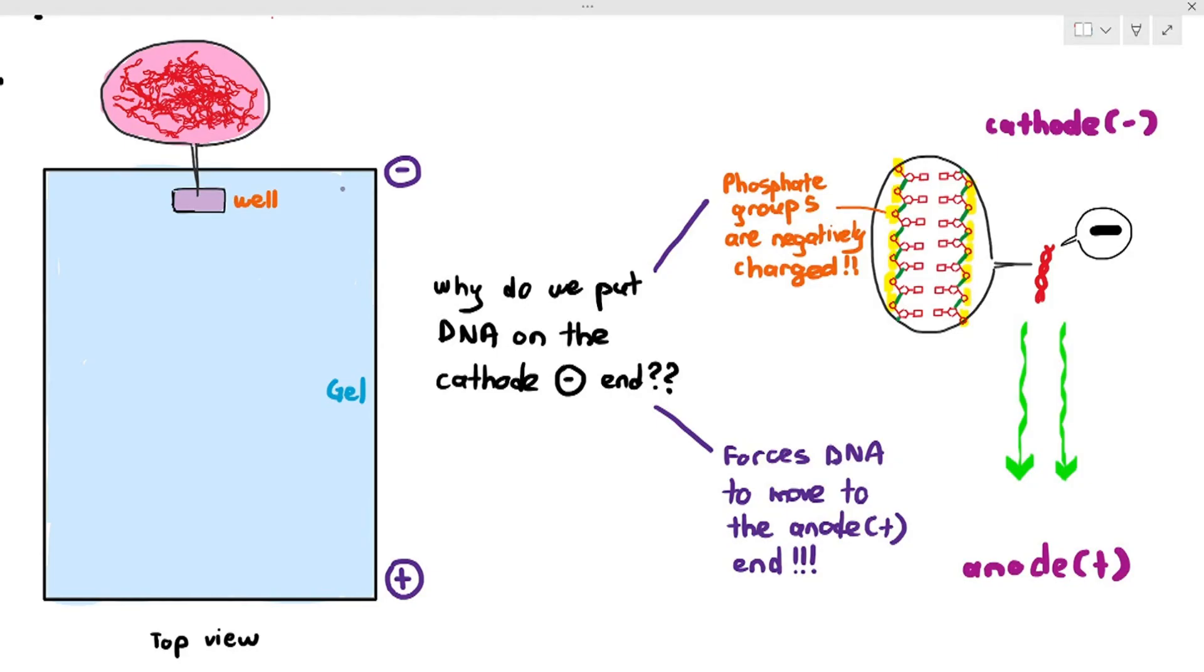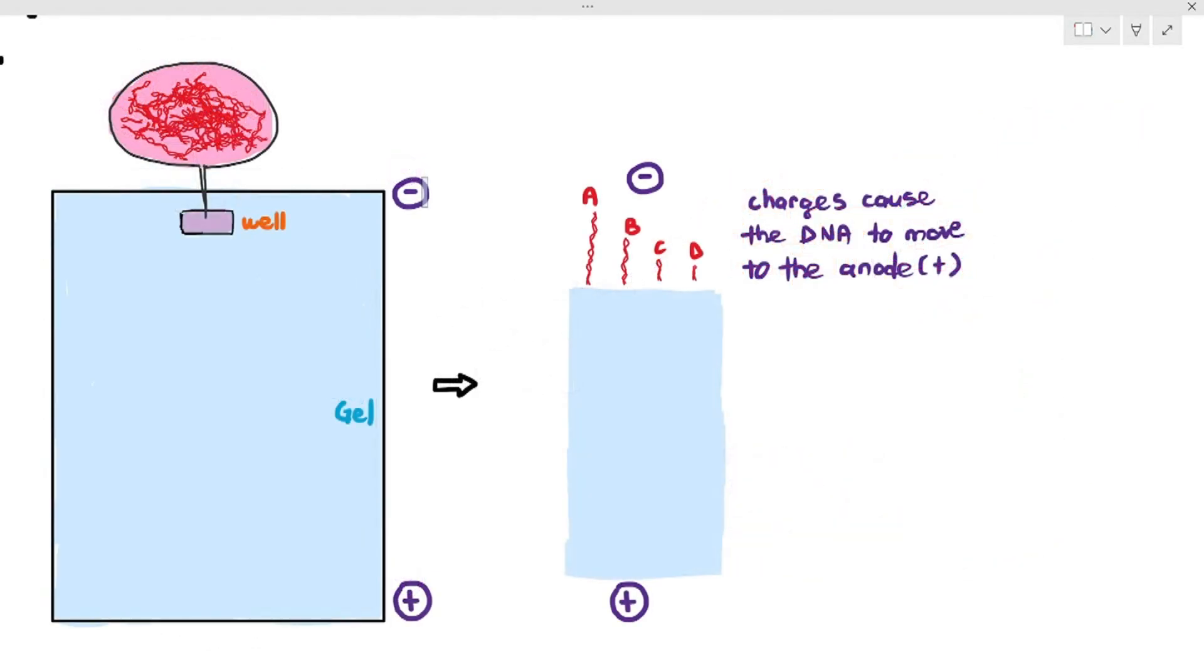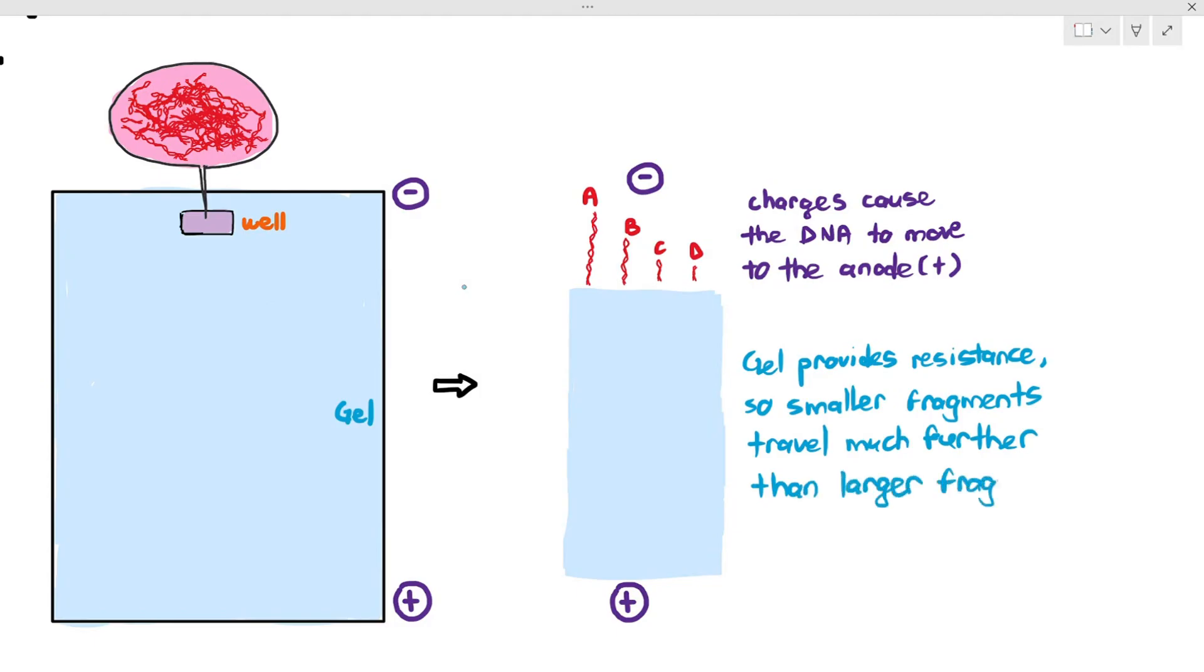By putting it in polyacrylamide gel, it will provide resistance. Resistance just means, imagine if you were just walking normally and you have no problems walking from one point to another point. But imagine walking in a pool of water, in a swimming pool, and you're trying to walk from point A to point B. You will have more resistance. The same principle applies here. The gel, that polyacrylamide gel, will provide resistance, and it makes it so that the smaller fragments will travel much further than the larger fragments.